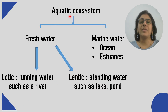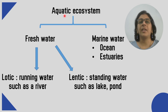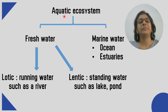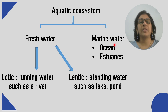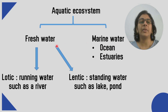When we talk about Aquatic Ecosystems — where there is water — there is a fresh water ecosystem and a marine water ecosystem. This way, we can divide it into two types.